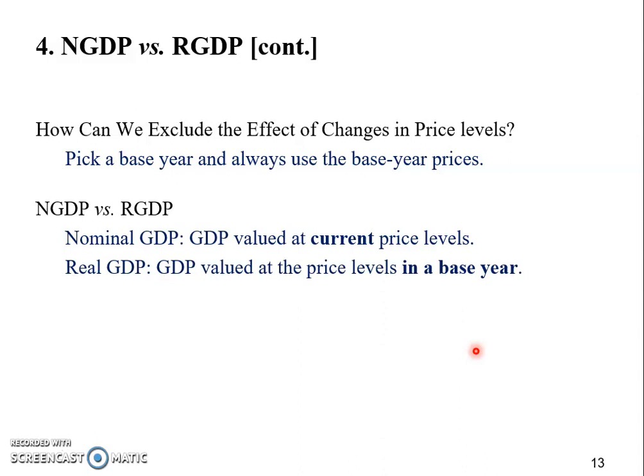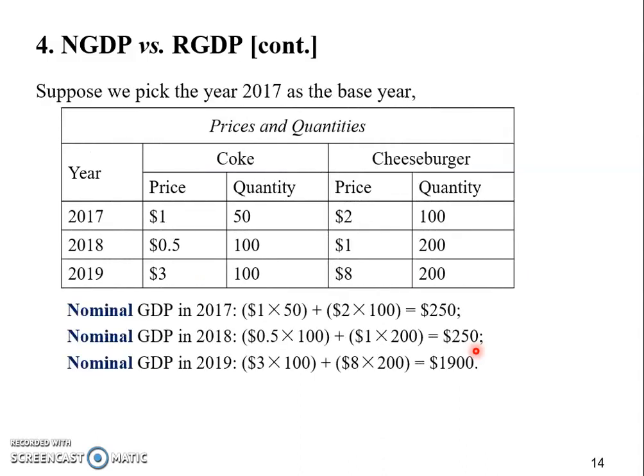For example, using that hypothetical economy from the previous table: if we take the very first year, 2017, as the base year, then when we look at output in 2019 we don't use 2019 prices — we go back and use 2017 prices, which gives us the 2019 real GDP. Now we'll go back and use that same table with the same prices, quantities, and three years.